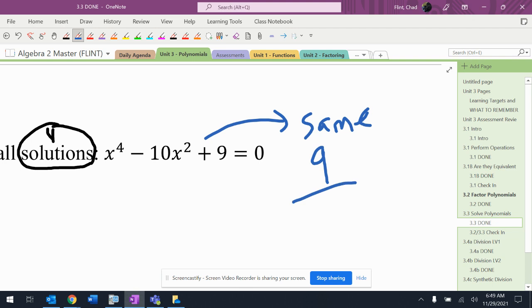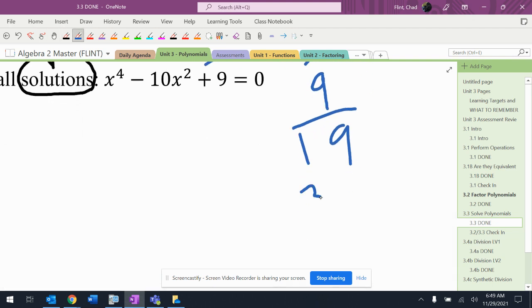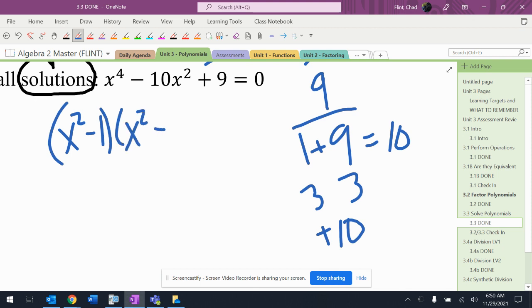And I'm looking for factors of nine, so I've got one and nine, or three and three. This needs to add up to ten. So if the signs are the same, one plus nine is ten. So I have x squared minus one and x squared minus - plus again - x squared plus one.